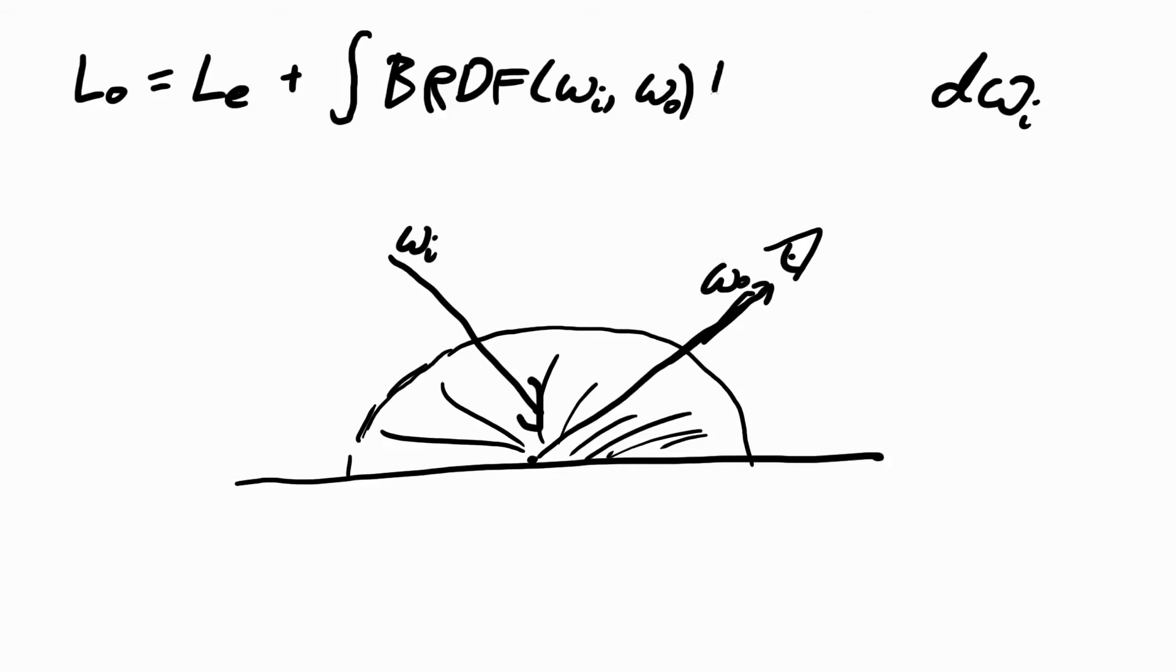And, we want to multiply that by the actual light coming from that direction. So, if there's no light coming from that direction, then obviously it's not going to contribute anything to what we see. Whereas, if there's a really bright light, that Li is going to be big, and so we'll get a lot of light contributed. I've drawn this too close. The last thing we need is omega i dot n, and I'll put the omega i back in.